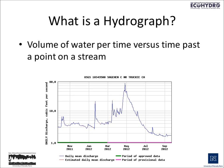A hydrograph is the volume of water per time versus time past a point on a stream. In the case of Sagehen Creek in California, this hydrograph going from October through September of 2012 illustrates the average daily flow rates past a gauging station on Sagehen Creek in the upper part of the Truckee River watershed.